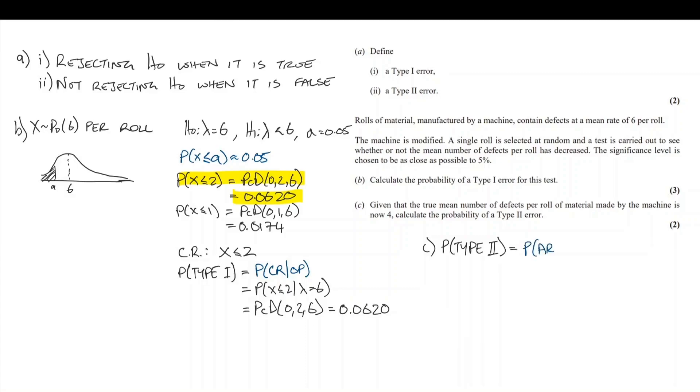Type 2 error is the probability of accepting with the new parameter, the probability of the acceptance region with lambda equals 4. The acceptance region here is the opposite of the critical region. So we're looking for x being greater than or equal to 3 when lambda equals 4.